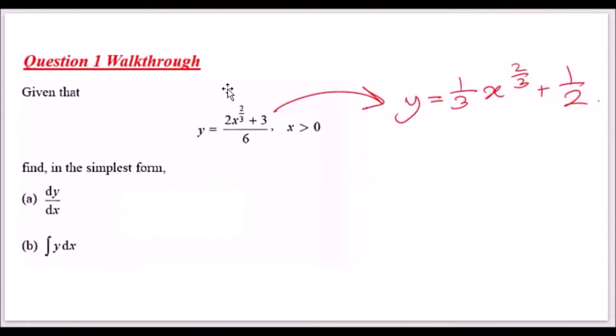Given that y equals (2x³+3)/6, where x is positive, find in the simplest form dy/dx and the integral of y with respect to x. Before you even do any of this, the first thing you should always do is simplify this equation as much as you can and get rid of the fraction.